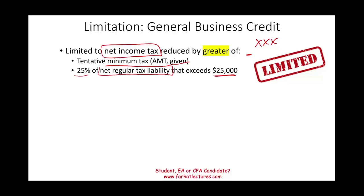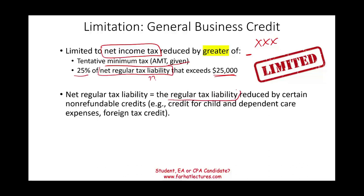When we say net regular tax liability, we mean your regular tax liability reduced by certain non-refundable personal credits, such as the child credit, child and dependent care credit, and the foreign tax credit. Most of the time those figures will be given to you. The net regular tax liability differs from net income tax in that it is reduced by those certain non-refundable credits.